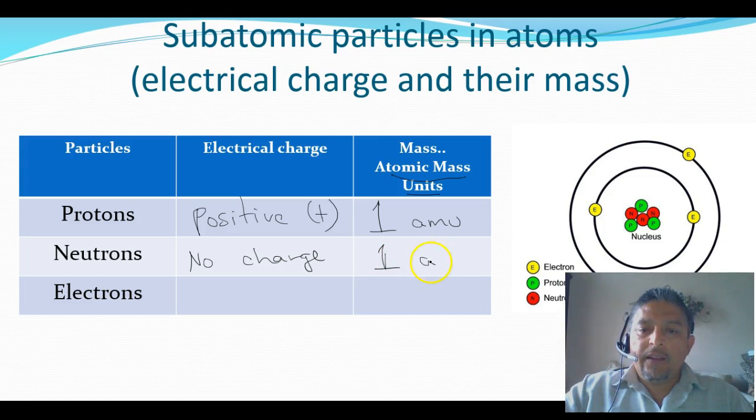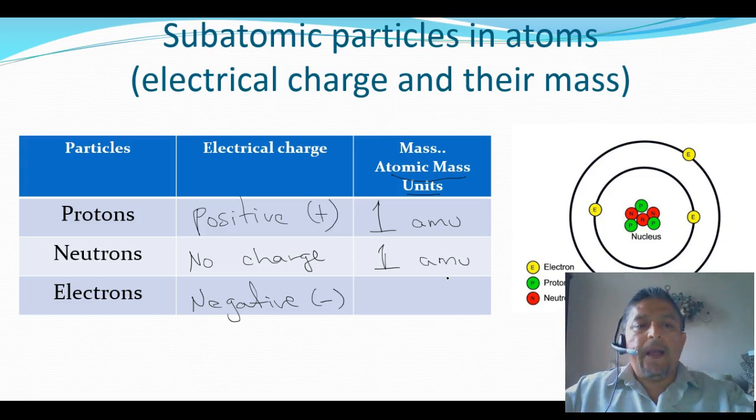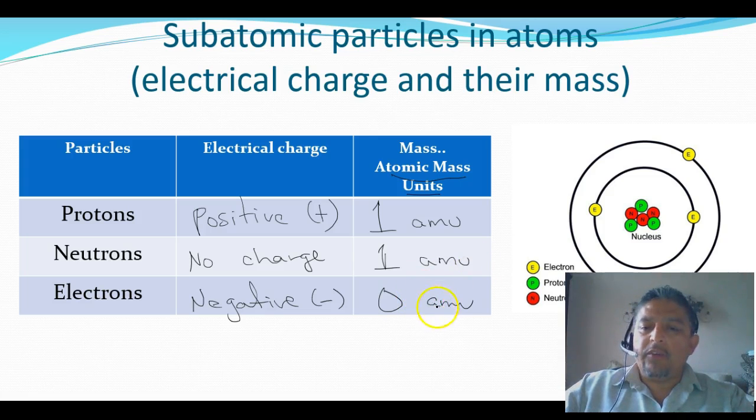The electrons, remember they have a negative charge. Negative charge. I like to put a negative sign inside the parenthesis. And these electrons are very, very small compared to the other particles. So therefore, we consider them not to have any mass even though their mass is very, very small. So for this one, just put that they have zero amus, or we just don't put any amus at all.